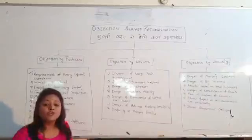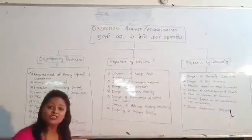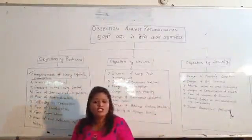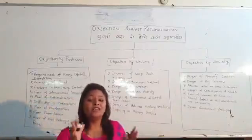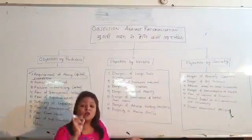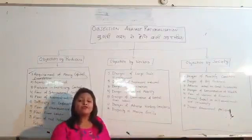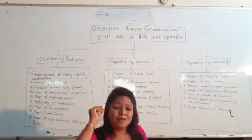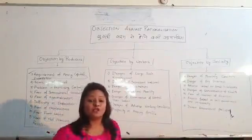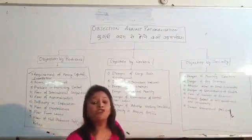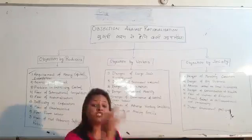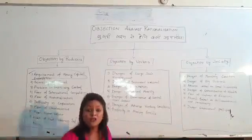First of all, we will see what is the objection from the point of view of producer. Number one is the requirement of heavy capital expenditure. Rationalization involves a revolutionary change in methods, techniques, and equipment, requiring automation, modernization, and mechanization. This requires heavy capital expenditure, which is not only complicated but very risky to borrow, and that is why the producer opposes rationalization.